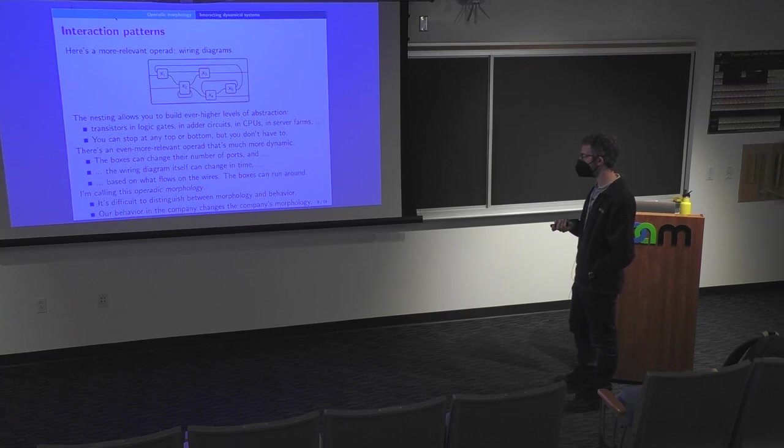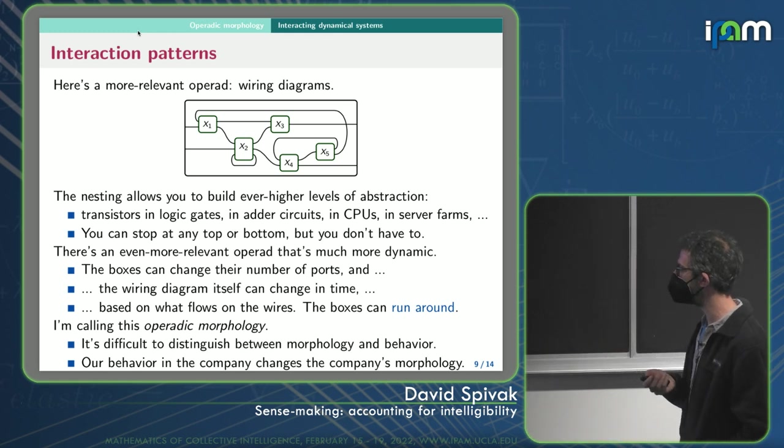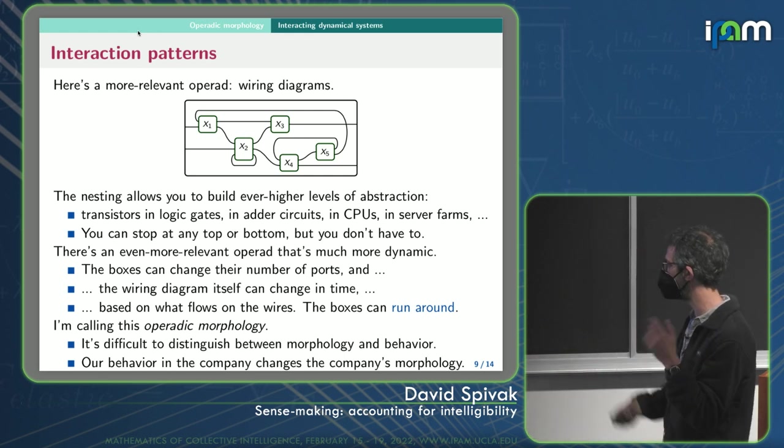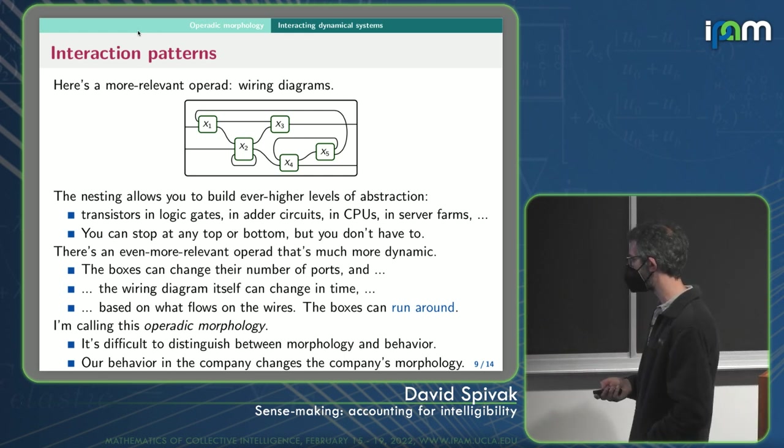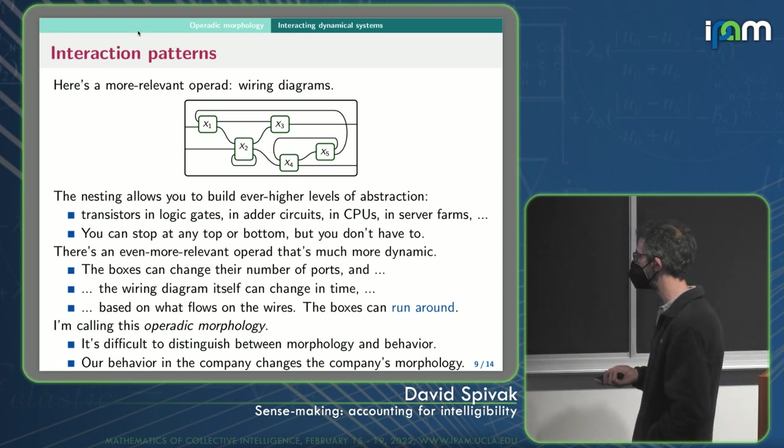So it's difficult. One thing I like about Mike Levin's stuff is it's difficult to distinguish between morphology and behavior. Like the behavior within a company, my behavior within a company can change the company's morphology. In other words, which people are talking to who, who's responsible, who's the report, who's the boss, whatever. So the morphology can change. And it's kind of hard to distinguish whether that's behavior or morphology.